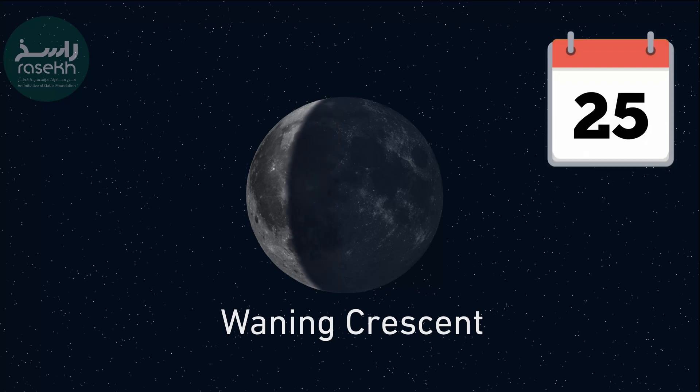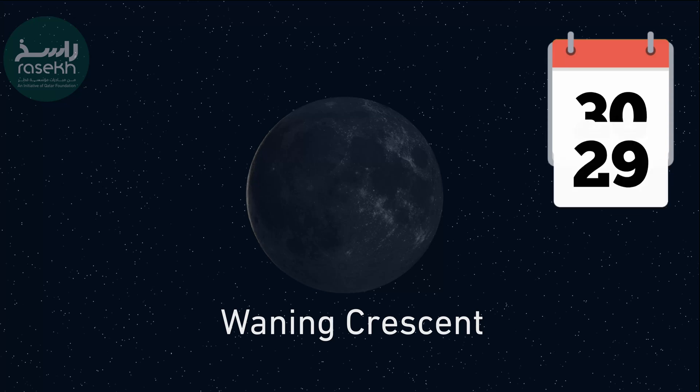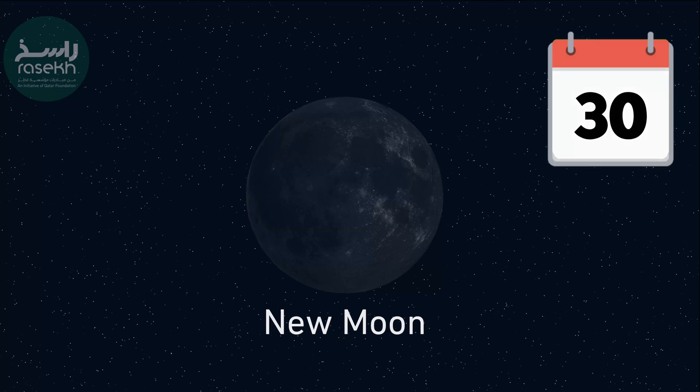Waning Crescent: Finally, we see a slender crescent shape diminishing until the cycle starts over again with a new moon.